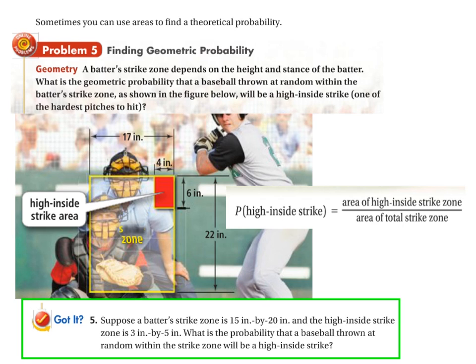The last type of problem we'll look at is geometric probabilities. In this case, we've got a batter's strike zone, and trying to find the probability that a pitch thrown somewhere in the strike zone would hit the high inside strike area for a difficult pitch to hit. We take the area of the high inside strike zone, which is a 4 by 6 rectangle, so that area would be 24, divide it by the area of the entire strike zone, which is 17 by 22, which is 374. We get our probability, which is about 6.4%.